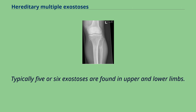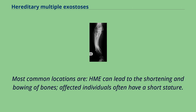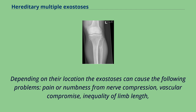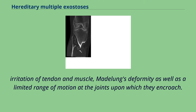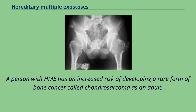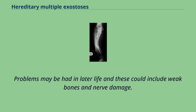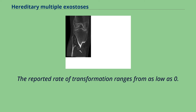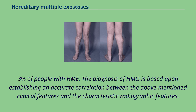Typically 5 or 6 exostoses are found in the upper and lower limbs. HME can lead to the shortening and bowing of bones, and affected individuals often have short stature. Depending on their location, exostoses can cause pain or numbness from nerve compression, vascular compromise, inequality of limb length, irritation of tendon and muscle, Madelung's deformity, and limited range of motion at encroached joints. A person with HME has an increased risk of developing chondrosarcoma as an adult, and problems may include weak bones and nerve damage. The reported rate of malignant transformation ranges from 0.57% to 8.3% of people with HME.